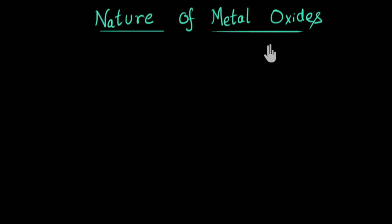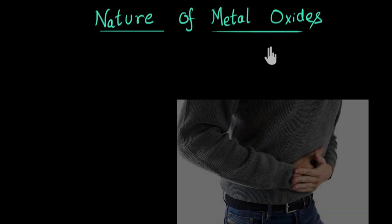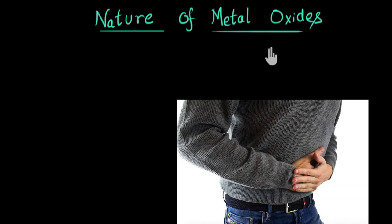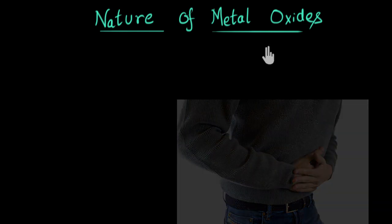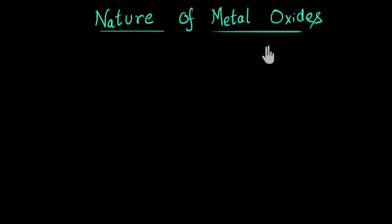Some metal oxides are even used as antacids. They can be used to neutralize the buildup of excess acid in our stomach, just like bases. So let's see how metal oxides behave as bases.